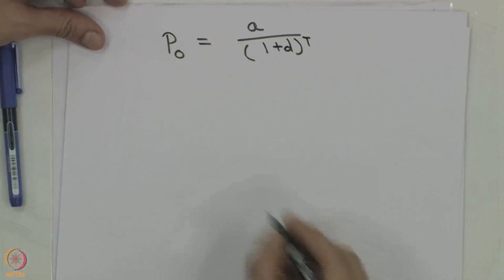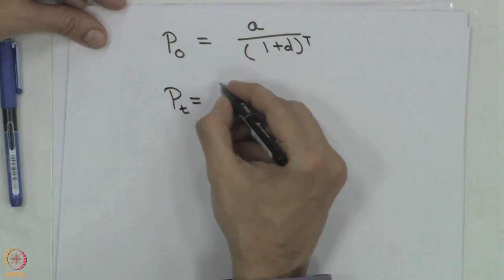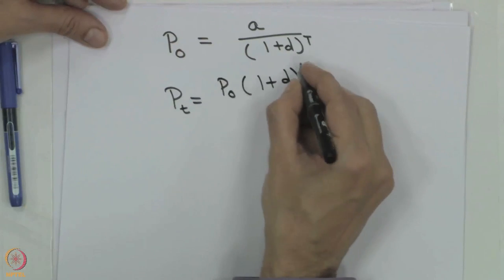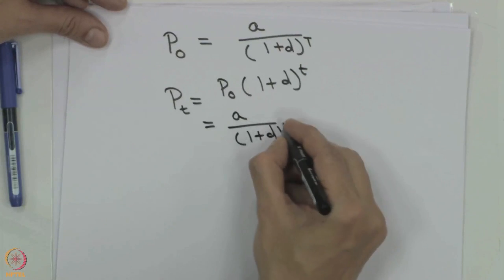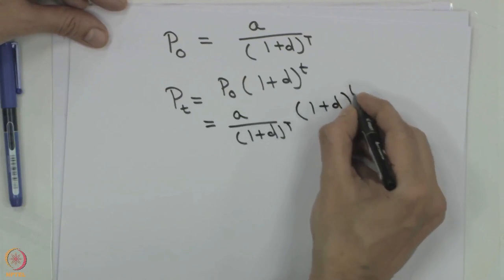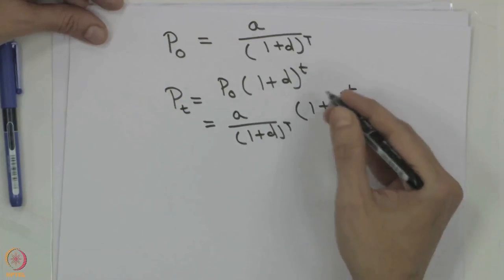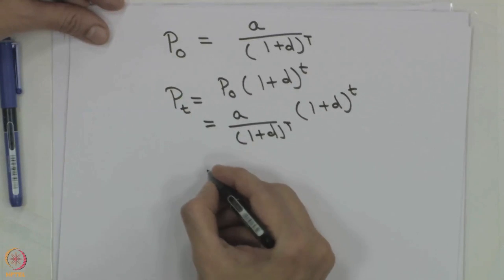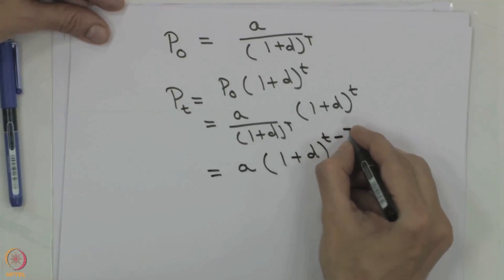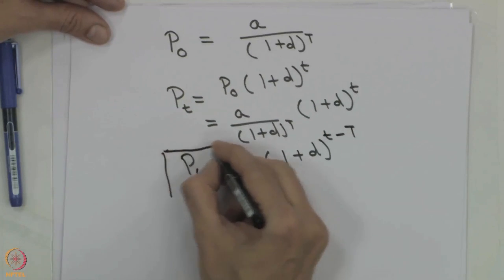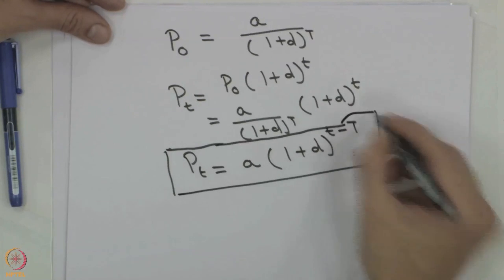We substitute back into that equation so that Pt at any time interval equals A·(1+d)^t / (1+d)^T, which can be written as A·(1+d)^(t minus T). Capital T is a constant we want to find out; t runs over 1, 2, 3, 4, etcetera. This is now our expression for Pt.